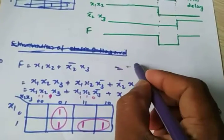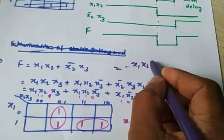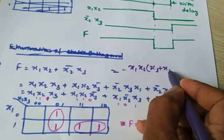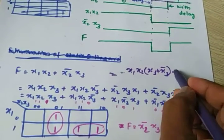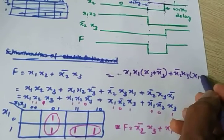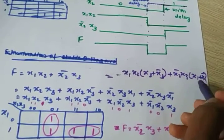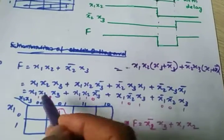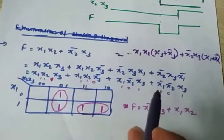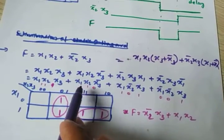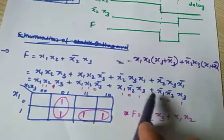Another method: directly from f = x1x2 + x2_bar x3. For the term x1x2, x3 is missing, so multiply by (x3 + x3_bar). For x2_bar x3, x1 is missing, so multiply by (x1 + x1_bar). Expand to get the minterms. For bar variables put 0, otherwise put 1, and map correspondingly into the K-map.